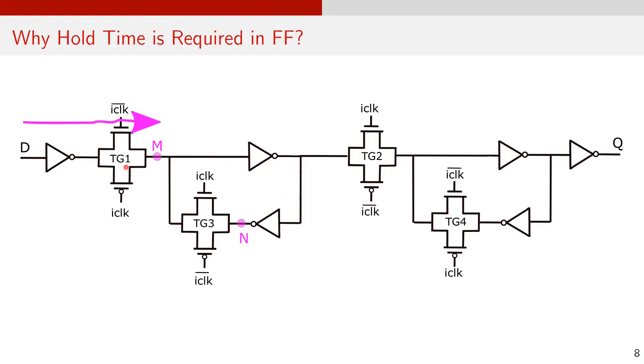While TG1 is turning off, it is important to maintain a stable value at input D to ensure a stable value at node M, which further propagates to output.